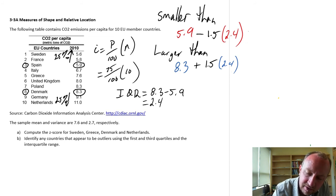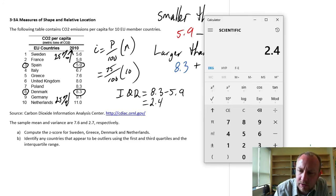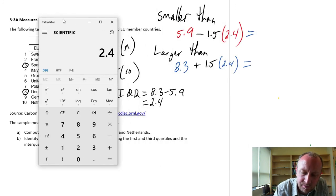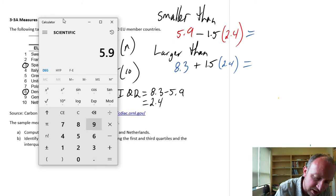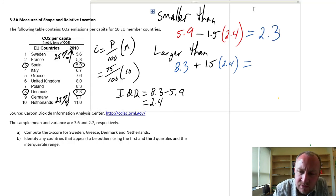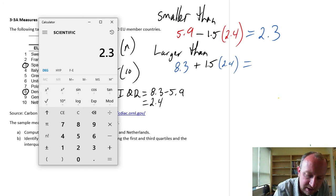So this gives us a lower bound. 5.9 minus 1.5 times 2.4, so this is 2.3. And finally the upper bound, 8.3 plus 1.5 times 2.4, 11.9.